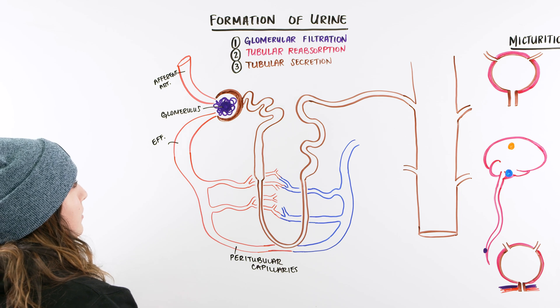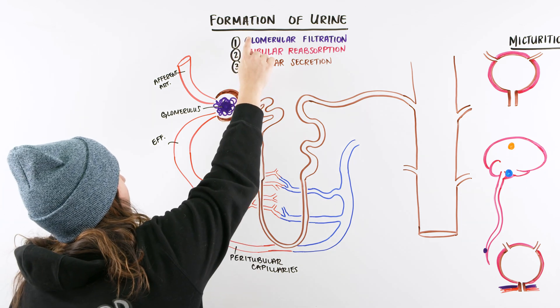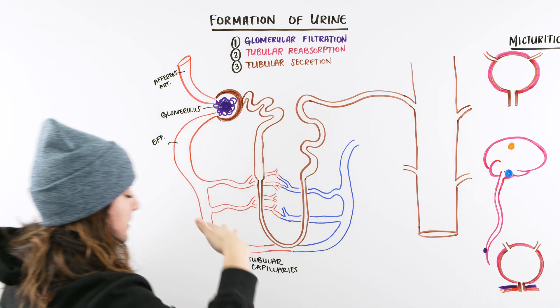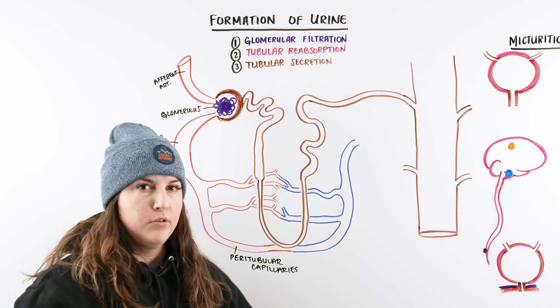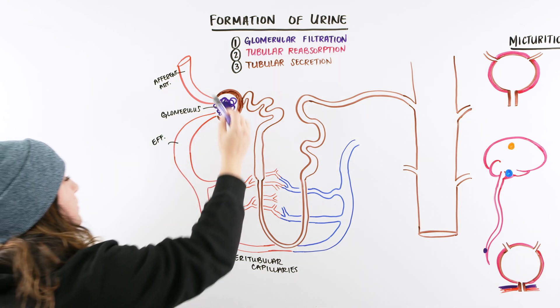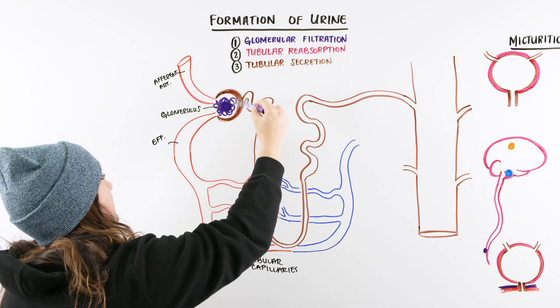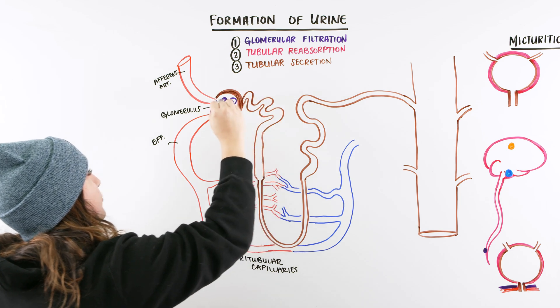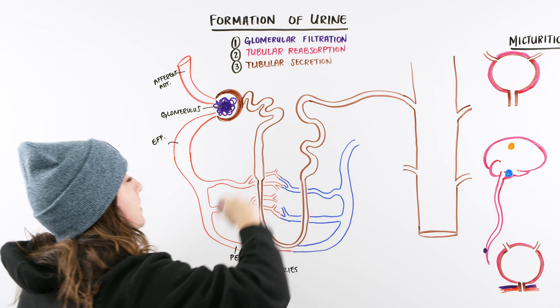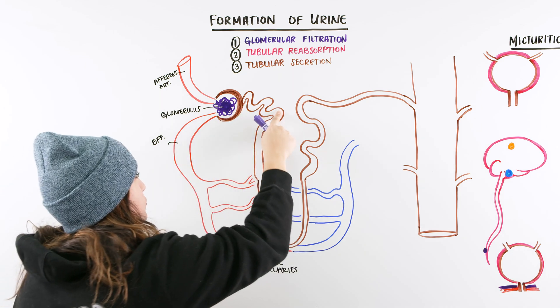So with our glomerulus, our first step in our urine formation is our glomerular filtration. So our glomerulus has a lot of different processes that it's going to go through. I'm going to touch on that in a different video. But there's fenestration openings, there's lots of different things that it needs to go through, different channels, and those little particles and molecules that are going to be able to go into our filtrate, finally get into our tubule.